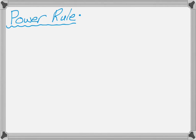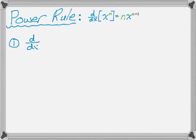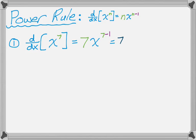So we'll start with the power rule, which I don't really expect you have forgotten. The derivative with respect to x of x to the n is n times x to the n minus 1. So you bring the power down, you subtract 1. For example, the derivative of x to the 7th is 7x to the 6th, because you bring the power down and subtract 1.